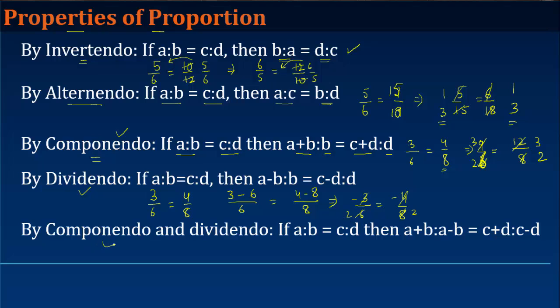And by combining these two properties of componendo and dividendo, 3 and 4, what we say is: if 3 upon 6 is equal to 4 upon 8, take this as a upon b is equal to c upon d, then a plus b upon a minus b—3 plus 6, 9, upon minus 3—should be equal to 4 plus 8 divided by c minus d, which is minus 4. So 9 by minus 3 gives you minus 3 over here, is equal to 4 plus 8 gives you 12 divided by minus 4 gives you minus 3. So again this property holds.